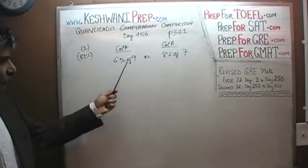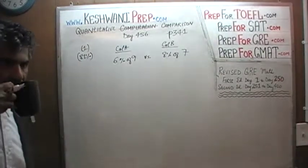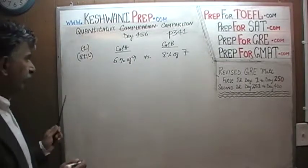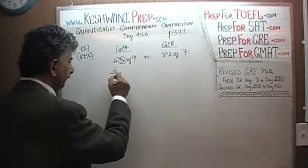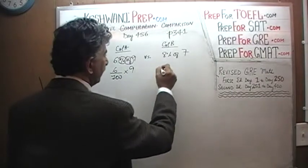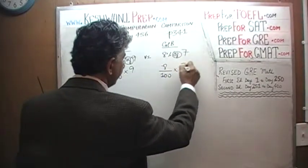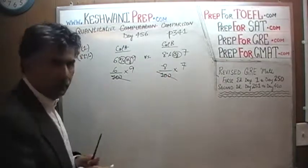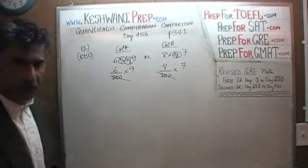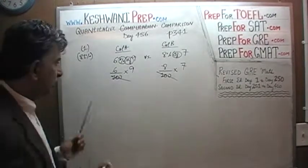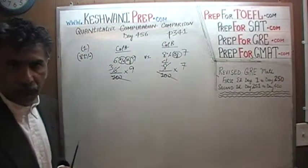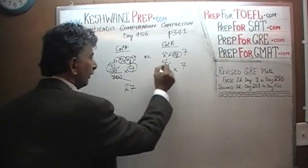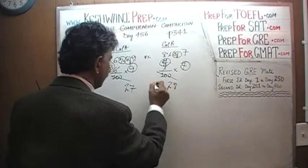6% of 9 versus 8% of 7. 6% means over 100, 'of' means times, times 9. 8% means over 100, times 7. Multiply both columns by 100 — the 100 drops out — and we are left with 6 times 9 versus 8 times 7. Divide both columns by 2: 6 becomes 3 and 8 becomes 4. So we are comparing 3 times 9, which is 27, versus 4 times 7, which is 28. The answer is B.